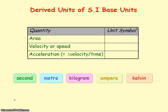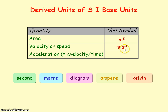Here are some quantities that have units derived from the SI base units. Area, which is length squared, has a unit of meters squared. Velocity has the same units as speed, and speed equals distance divided by time. Distance is measured in meters and time in seconds, so the units for speed and velocity are meters per second.